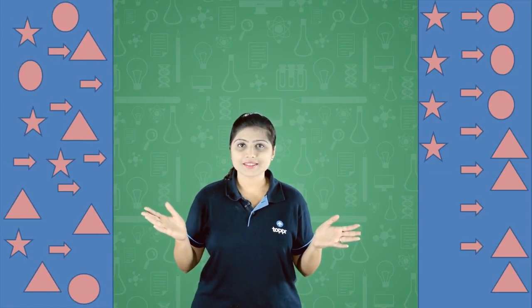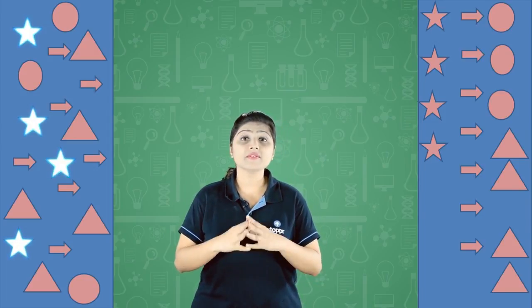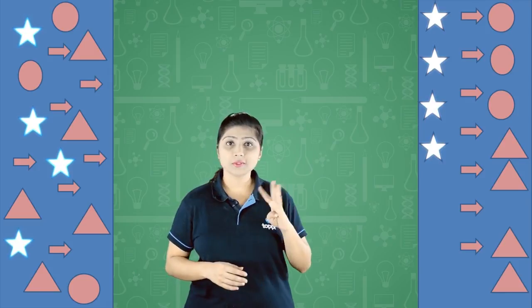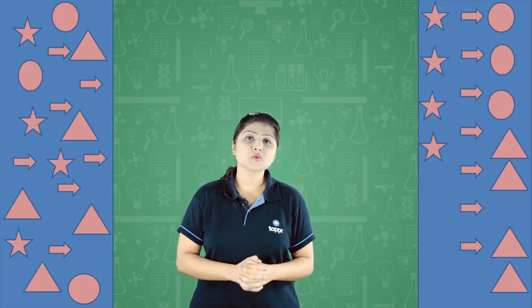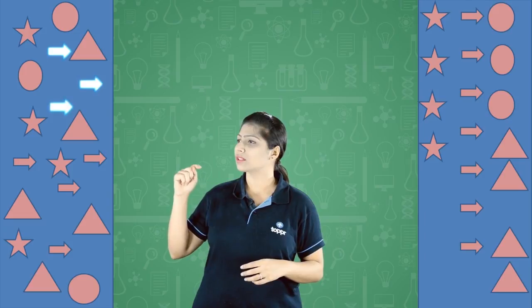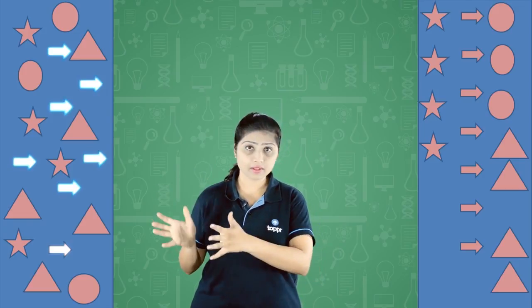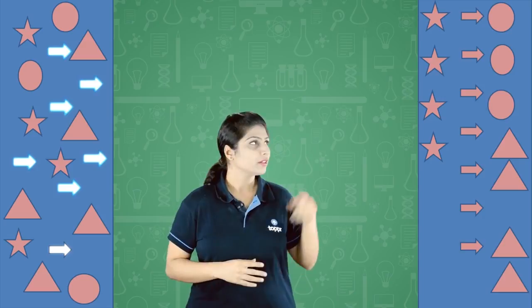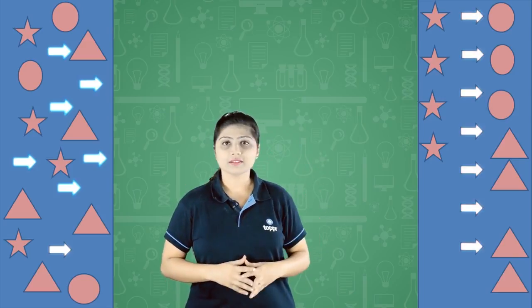Look at these two pictures. Count how many stars do you see here? 1, 2, 3, 4. And how many stars do you see here? 1, 2, 3, 4. How many arrows do you see here? 1, 2, 3, 4, 5, 6, 7. And how many arrows do you see here? 1, 2, 3, 4, 5, 6, 7.